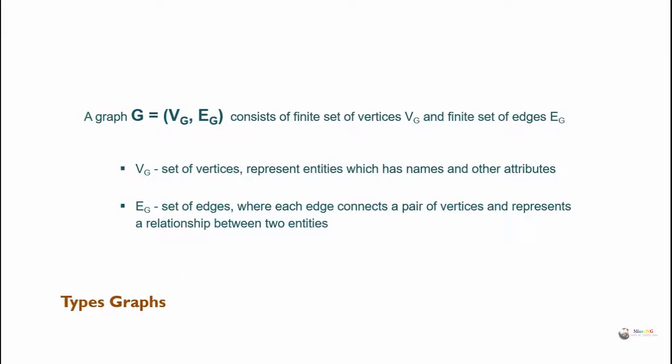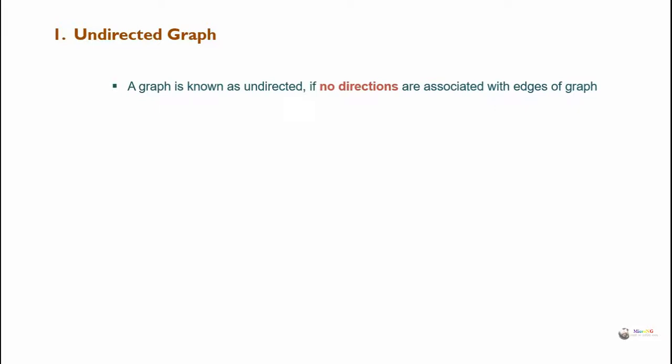Types of graphs. First, undirected graph. A graph is known as undirected if no directions are assigned to the edges of the graph. Edges of an undirected graph are represented by unordered pairs of vertices.